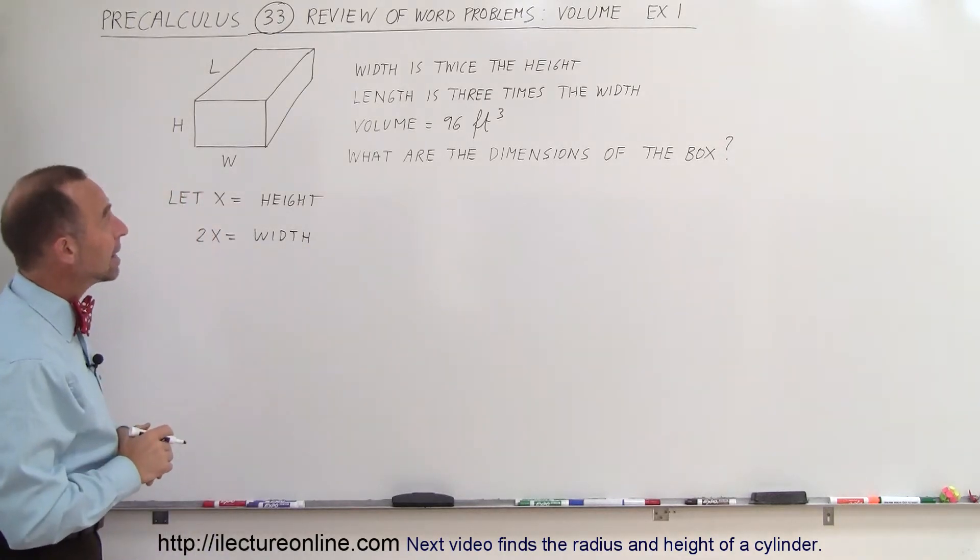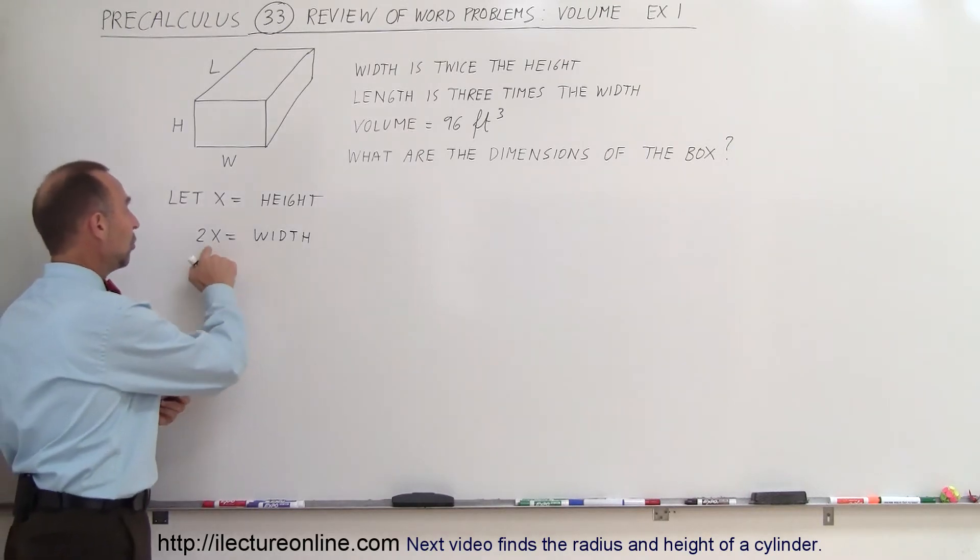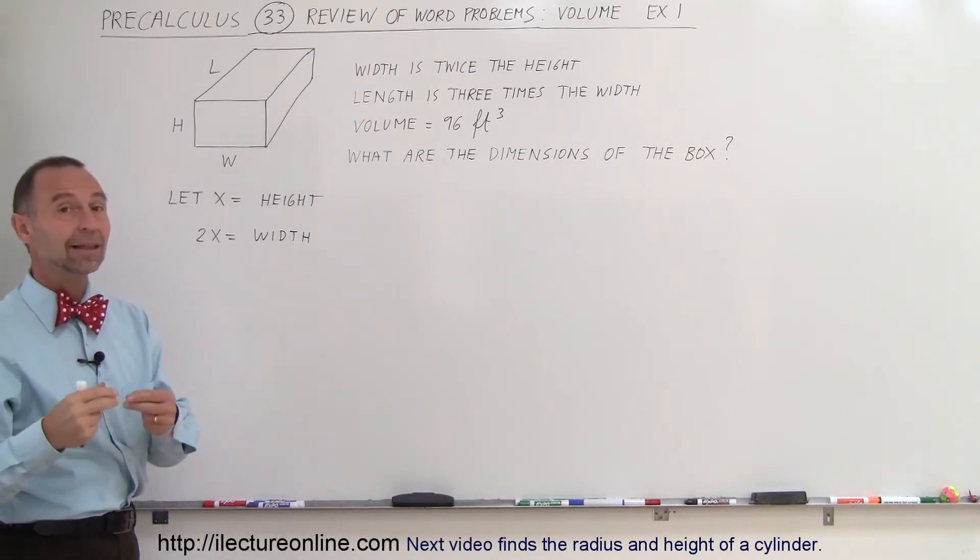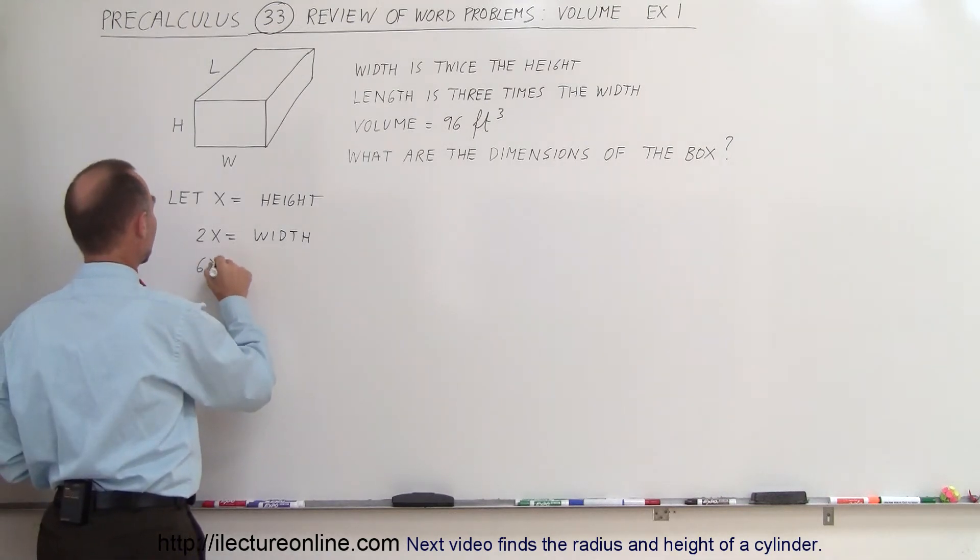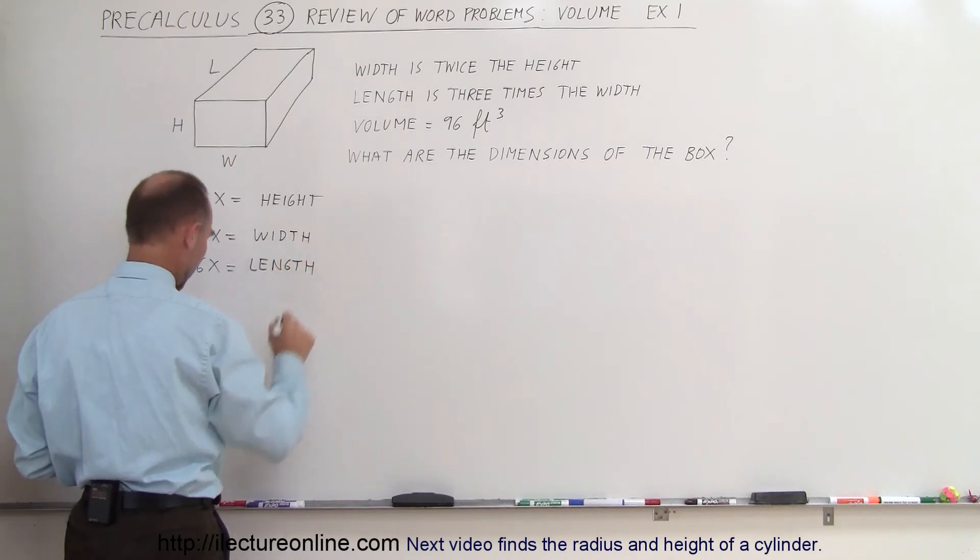Now, the length is 3 times the width. So if the width is 2x and the length is 3 times that, that means 6x must be the length. So 6x is equal to the length.